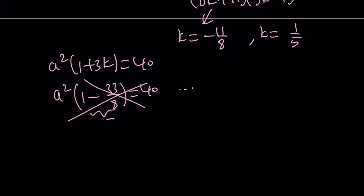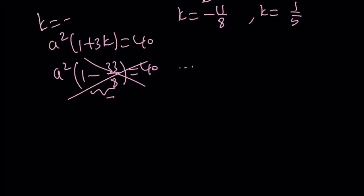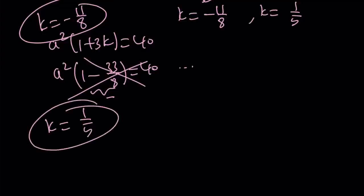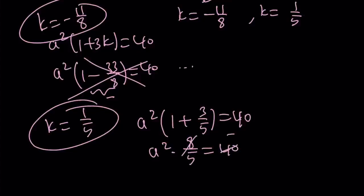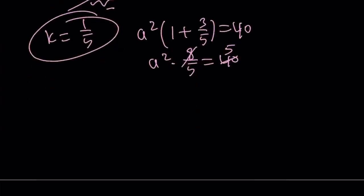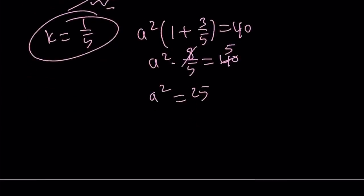In this case, k equals negative 11 over 8 didn't work well. Let's check k equals 1 fifth. If k is 1 fifth, then we get a squared times 1 plus 3 over 5 equals 40. This is 8 over 5. This gives us a squared equals 25. Nice. I like that.